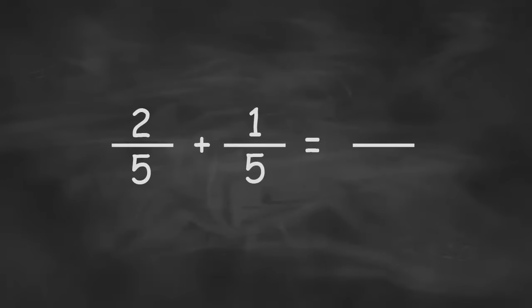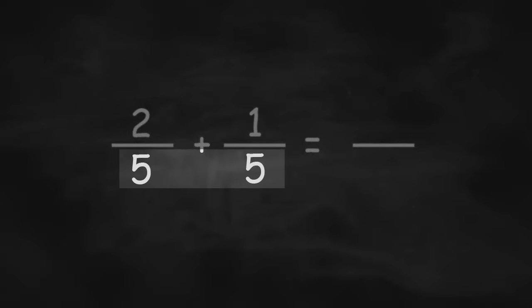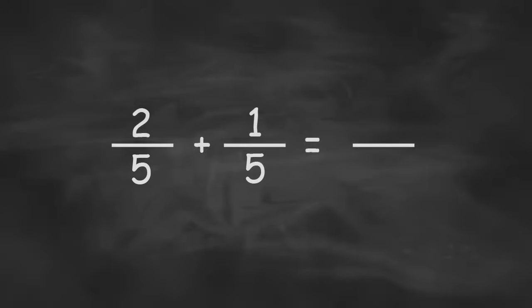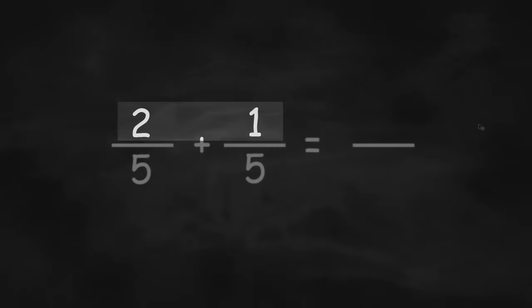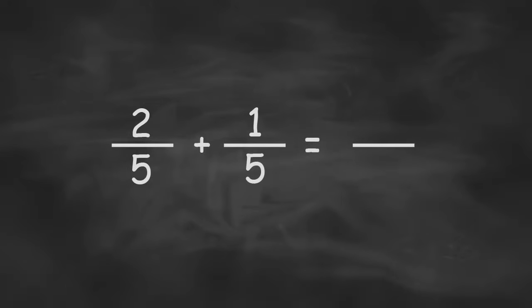The easiest type of fraction is when the bottom number, or the denominator, is the same, like this example. We have 2 fifths plus 1 fifth. Since the denominator is the same, they're both fifths, we can just add them together. So we add 2 plus 1, we keep the denominator the same, and we get the answer 3 fifths.